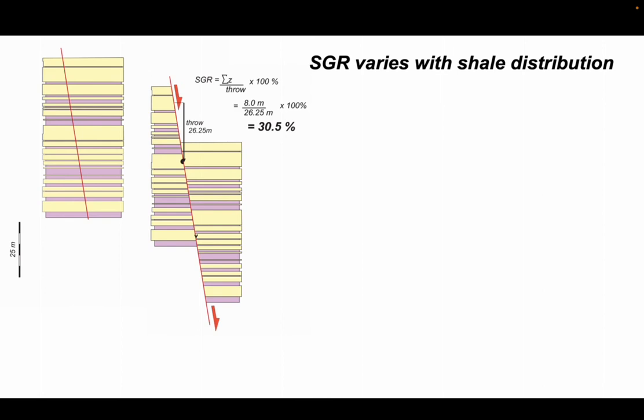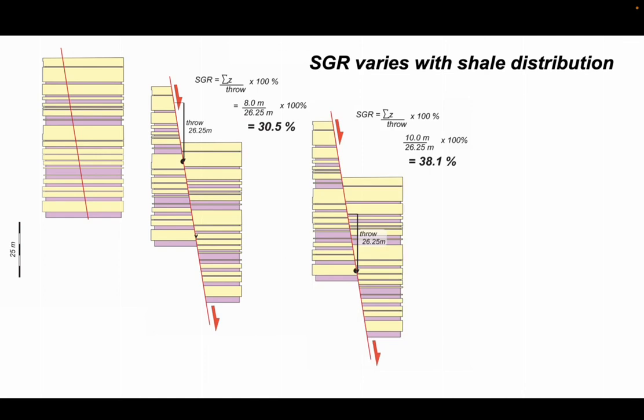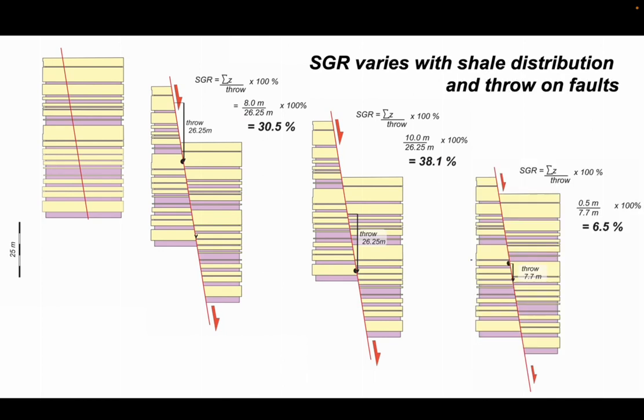We've seen that the shale gouge ratio varies. It varies with shale distribution. So for this single fault scenario with a single value of throw, the SGR still varies because the shale distribution in the original stratigraphic column is non-uniform. And we've also seen that the SGR is sensitive to the throw itself.